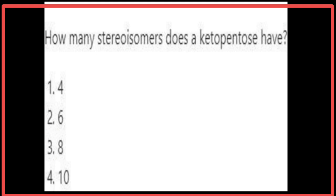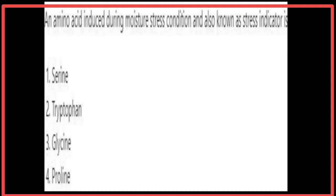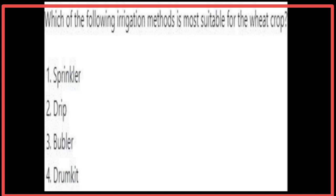A keto pentose has four stereoisomers. The amino acid induced during moisture stress and also known as a stress indicator is proline. The sprinkler method of irrigation is most suitable for the wheat crop.